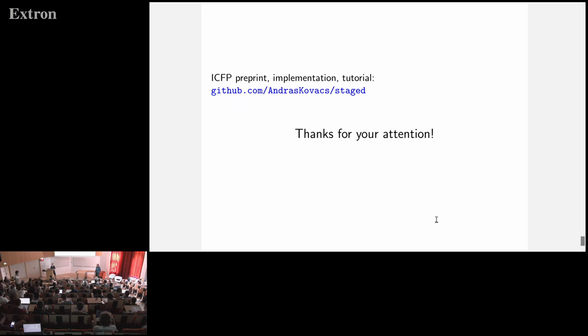It is possible, and discussed in the preprint, but it doesn't always work. It works well for simple, simply-typed object theories. The issue is that staging requires everything to be stable under object-theoretic substitution. If you can arbitrarily analyze code — for example, check whether a term is a variable — you violate that stability. A solution is to require stability only under weakening, not substitution, but then the object theory cannot be dependently typed since type dependency requires substitution.